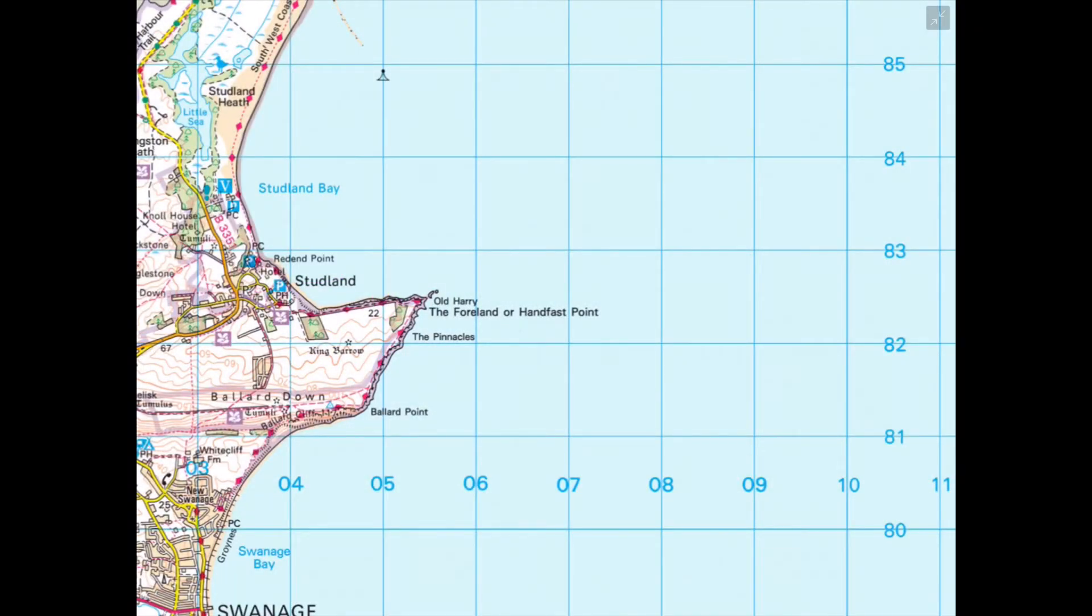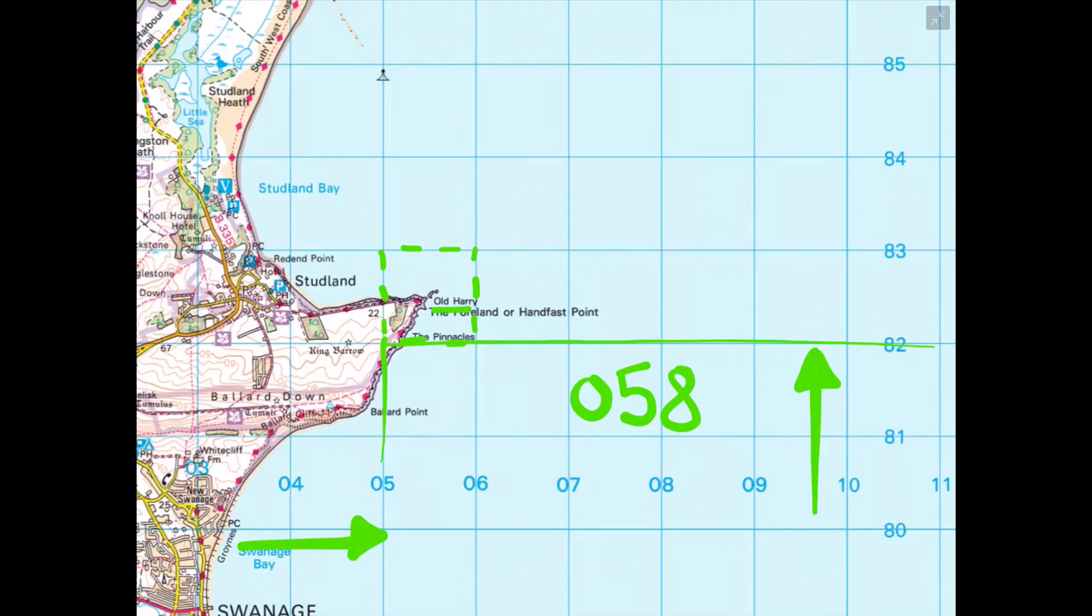Alternatively they could ask you an OS map skills based question and this is where they will provide you with an OS map. You will have to find or locate a feature in this case Old Harry and they might ask you to give in this case a four figure grid reference so we need to highlight the box that Old Harry is located in. We locate the bottom left hand corner to give a four figure grid reference and we go along the corridor and find the line that links to the bottom left hand corner of our grid square in this case it is 05. Then we go up the stairs or up the side of the OS map and again find the two numbers that link to the bottom left hand corner of our grid square in which case it is number 82. And then the answer to this exam question would be where is Old Harry on the OS map? Give a four figure grid reference the answer is 0582.